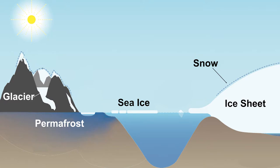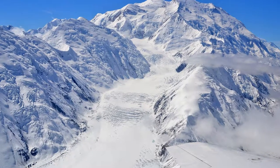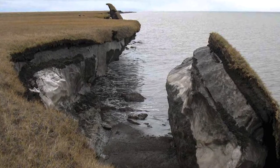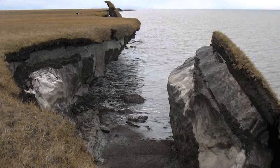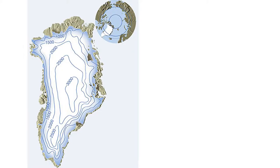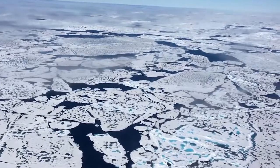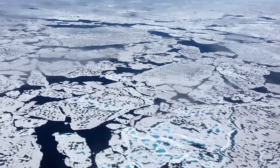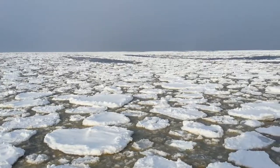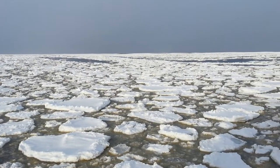The cryosphere includes all things frozen, such as glaciers, snow, and frozen ground, or permafrost. The largest glaciers on the planet are part of the Greenland and Antarctic ice sheets. Sea ice is found only in the polar regions, where it is cold enough that the oceans can freeze.